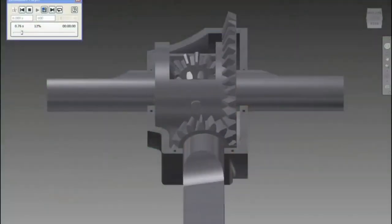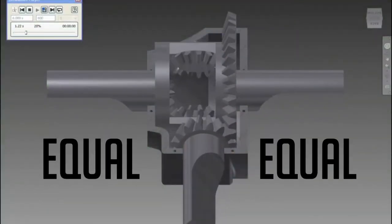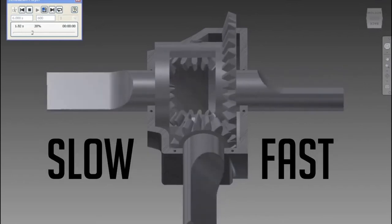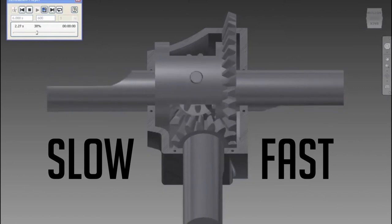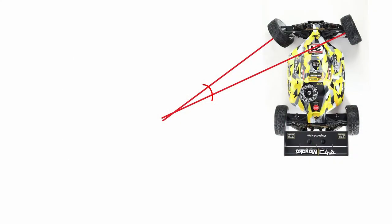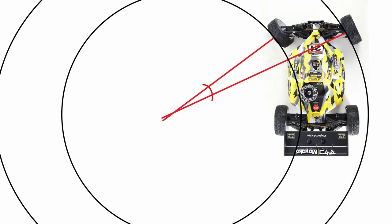Regardless of how many differentials are in the car, the basic principle of how they work is the same. The differential allows either the left and right tires, or the front versus rear tires, to turn at different speeds. If you remember when we talked about steering geometry and driving around a corner, the inside tire has to turn more than the outside tire because it's driving around a tighter arc. That also means the inside tire is turning slower than the outside tire in that corner, so the inside versus outside tires need to be allowed to turn at different speeds. That's what differentials allow the tires to do.